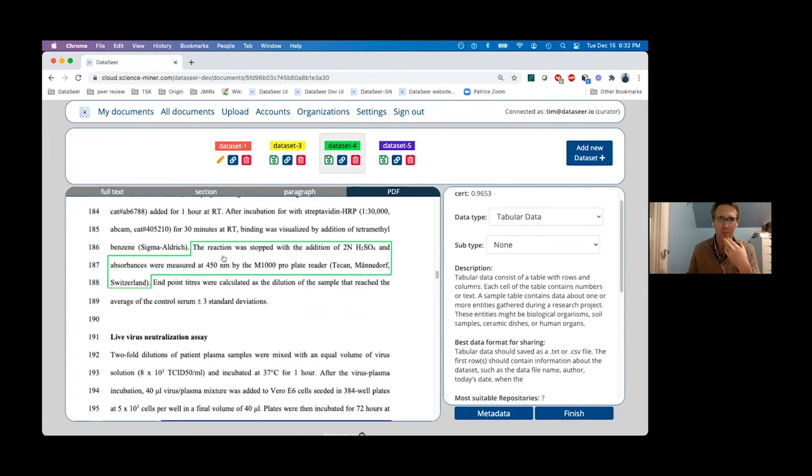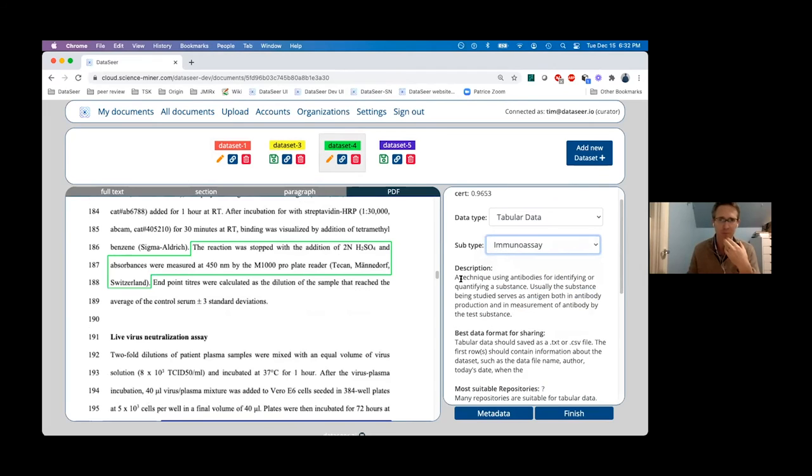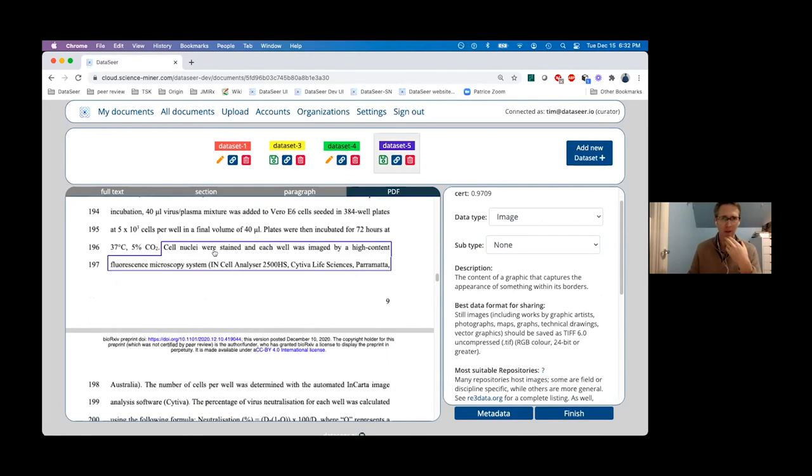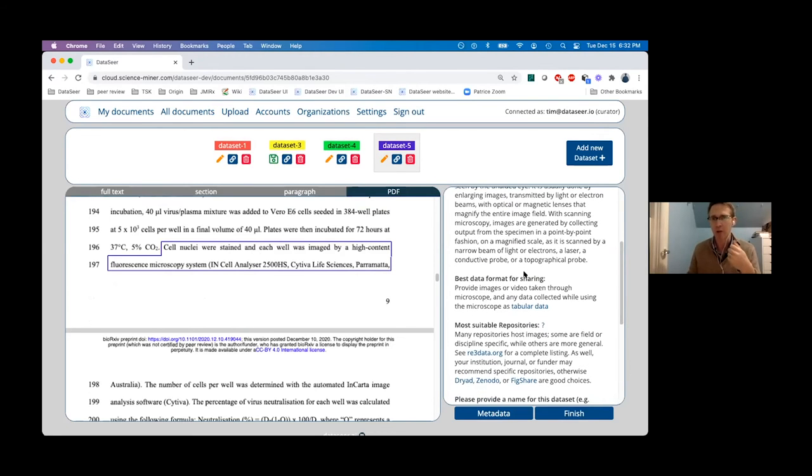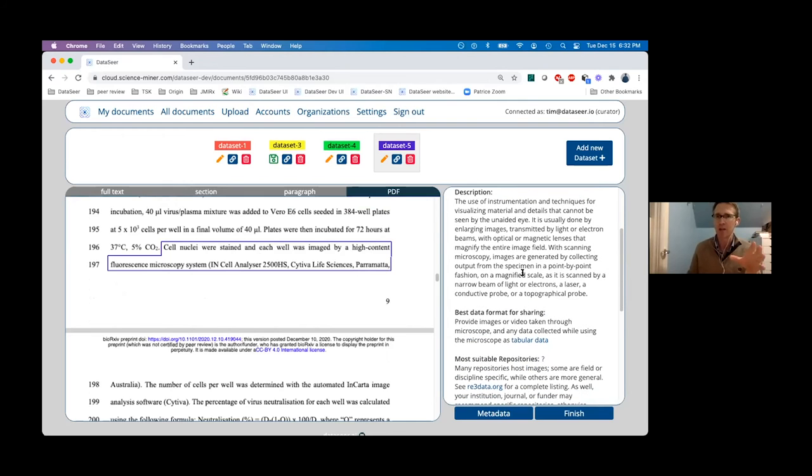Down here, reaction was stopped, the addition of H2SO4, and absorbances were measured by a ProPlate reader. So that is an immunoassay. And there's a fifth, it's here with microscopy dataset. This is imaged by a high-content fluorescent microscopy system. So that's an image and then the subtype is microscopy.